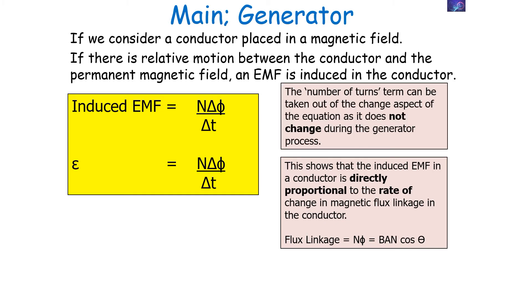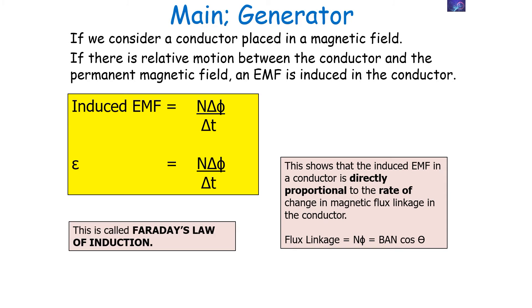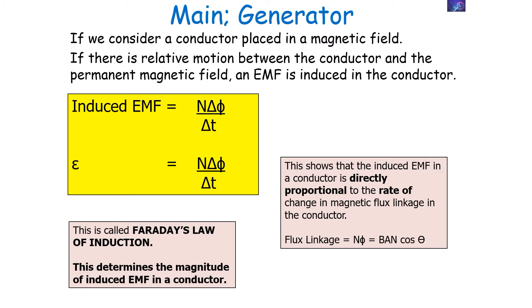It's important to note that the number of turns N can be taken out of the change aspect of the equation, as it doesn't change during the generator process. Therefore, we can move the delta symbol on the top part of the equation next to Φ instead of N, because it will be the flux Φ that is changing in this situation, not the number of turns in the conductor. We call this equation Faraday's law of induction, and it determines the magnitude of the induced EMF in a conductor.